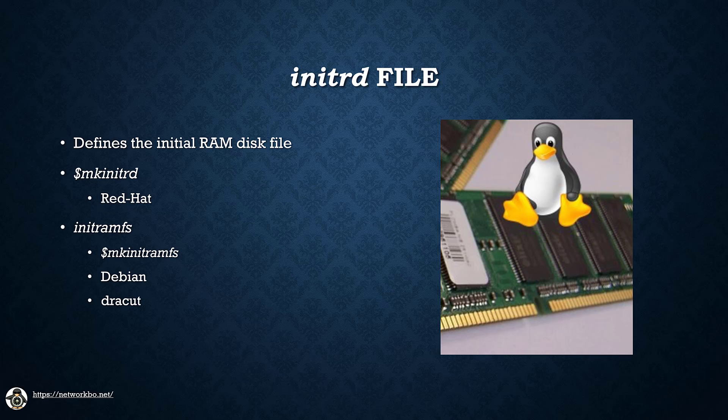In Ubuntu-type systems this file is called the initrdramfs and you create it using the mkinitramfs command. You can also use the dracut utility which creates the initrdramfs image from a framework and copies the files from the installed modules for the devices that you are adding to your machine.